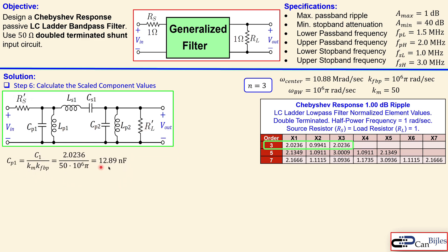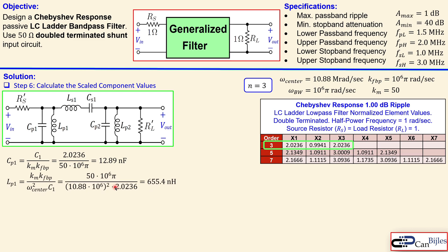Moving on to the calculations: the formula for Cp1 uses the coefficient C1 from the table, Km = 50 (since we scale from 1 ohm to 50 ohm), and KF_BP = 10^6 π radians per second. Substituting everything, we calculate Cp1 = 12.89 nF. Lp1 is related to the center frequency omega_center and C1; substituting everything gives Lp1 = 655.4 nH.